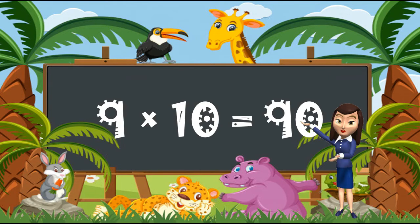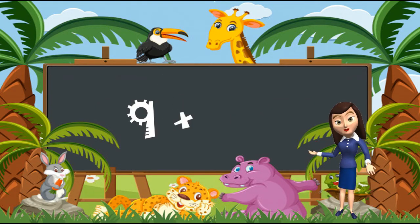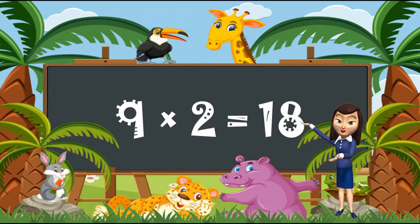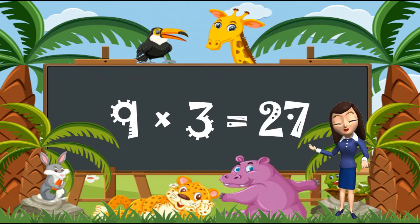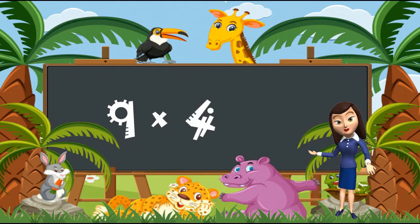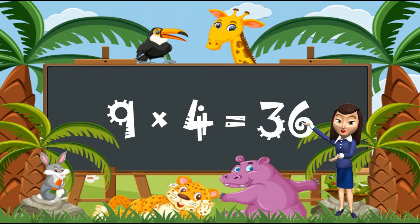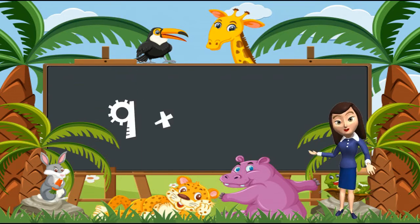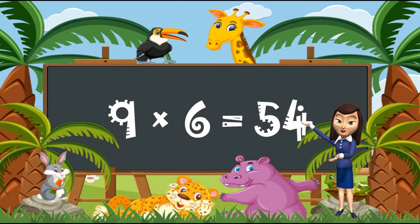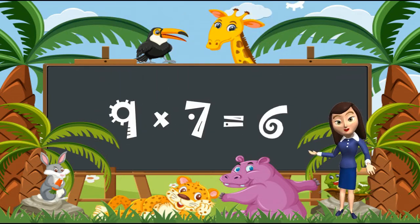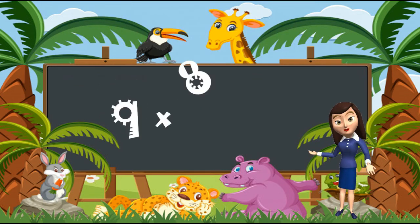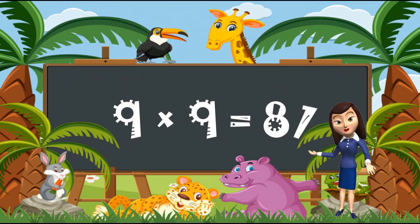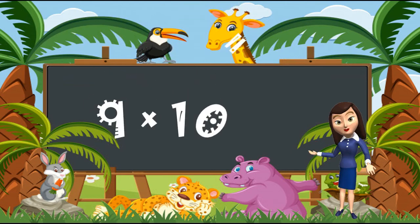So, we will repeat the table of 9 once again. 9 times 1 is 9. 9 times 2 is 18. 9 times 3 is 27. 9 times 4 is 36. 9 times 5 is 45. 9 times 6 is 54. 9 times 7 is 63. 9 times 8 is 72. 9 times 9 is 81. 9 times 10 is 90.